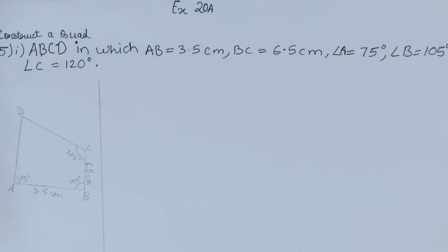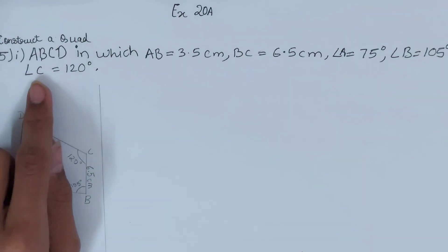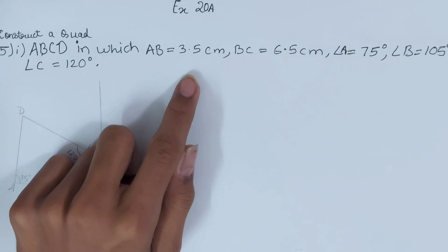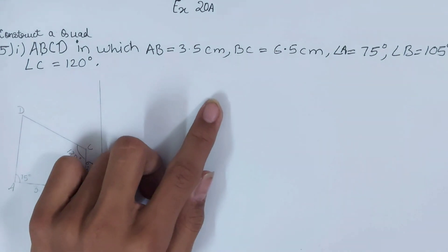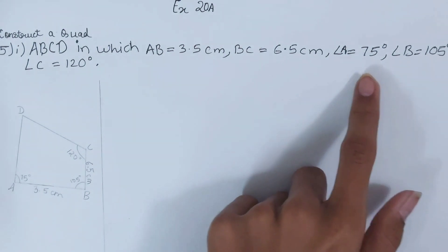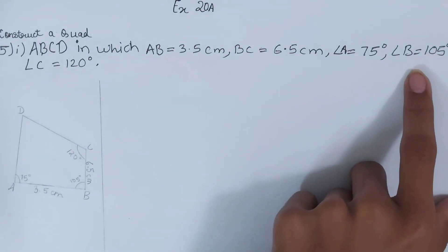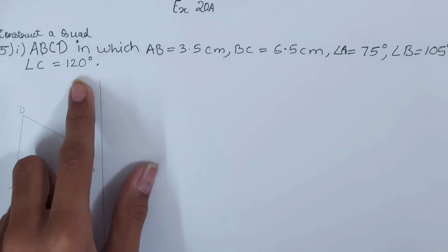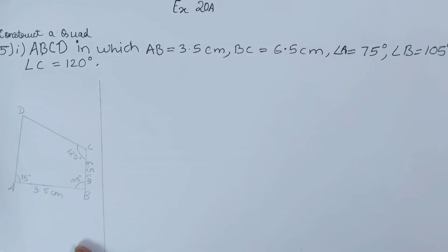Welcome back to my YouTube channel. In this video we are going to solve ICS Mathematics Class 8, Chapter 20: Construction of Quadrilaterals, Exercise 20A, Question Number 5. We have to construct a quadrilateral ABCD in which AB = 3.5 cm, BC = 6.5 cm, angle A = 75°, angle B = 105°, and angle C = 120°.